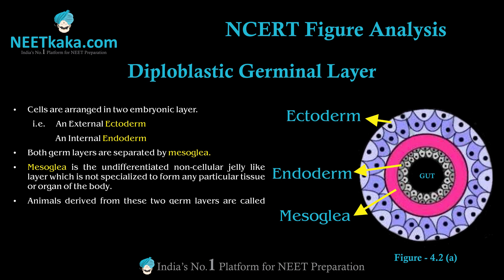Animals derived from these two germ layers are called diploblastic, and the examples are the members of phylum Cnidaria and Ctenophora.